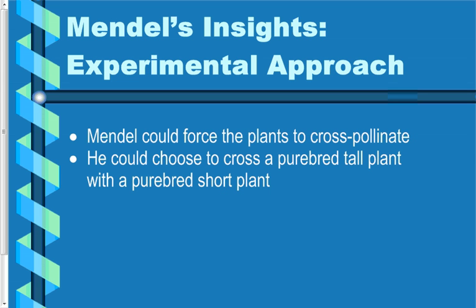If you want to do multiple generations, you're talking multiple years. Mendel, being a monk, maybe had a little more free time than some other people did. Today, most genetics experiments tend to be done on species that reproduce more quickly — we often use things like fruit flies to get a generation in just two or three weeks, as opposed to waiting an entire year.